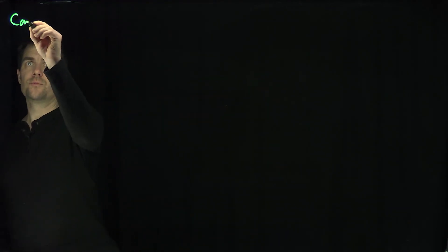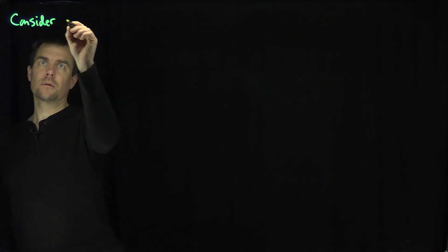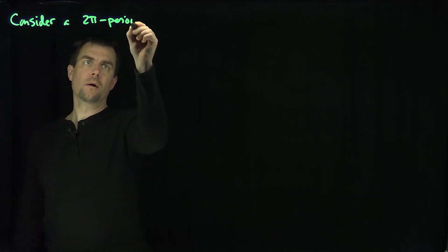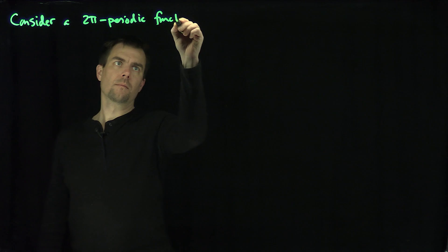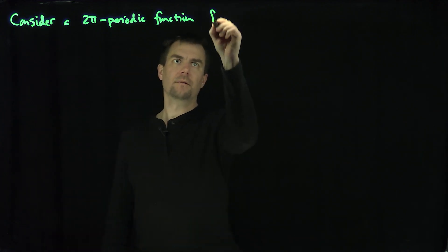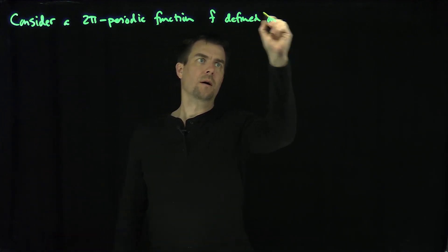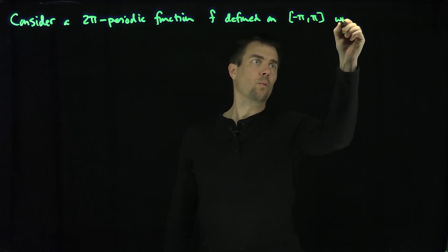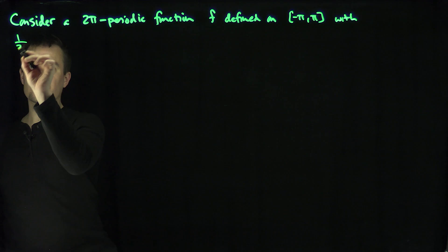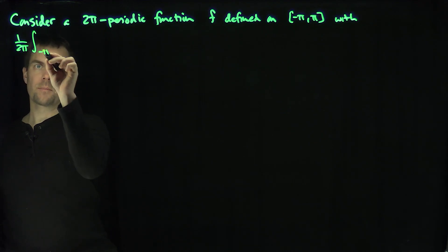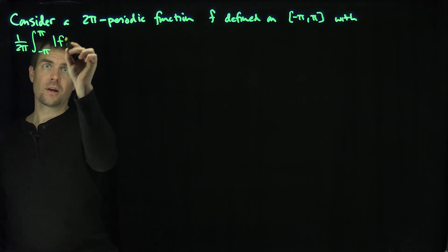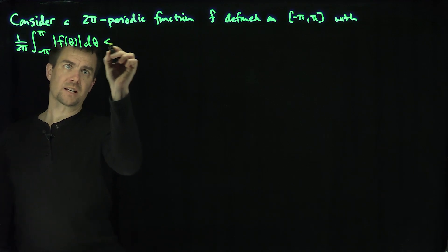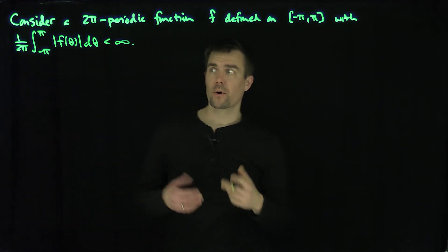Hello, students. In this video, we'll discuss properties of the Fourier coefficients of a function. Let's consider a 2π-periodic function f defined on negative π to π, with the technical condition that we need: the integrability condition — 1 over 2π times the integral from negative π to π of f(θ). I'd like the function to satisfy this so I can make sense of what the Fourier coefficients are.